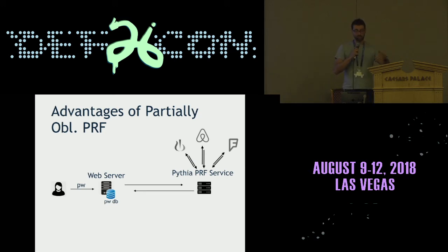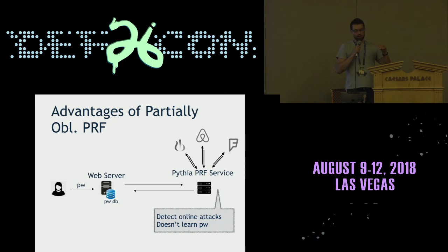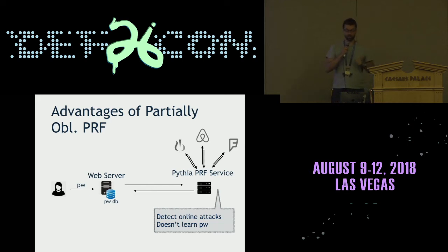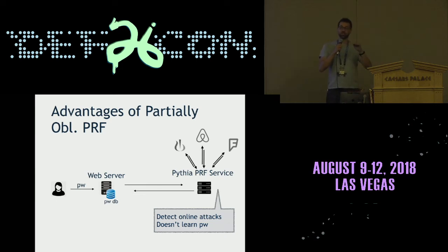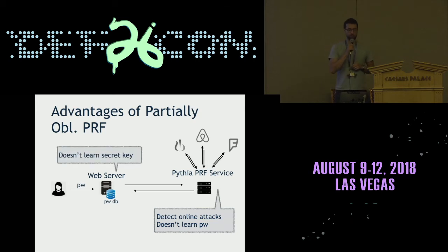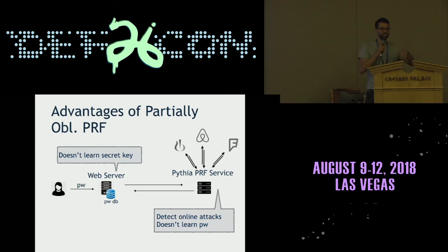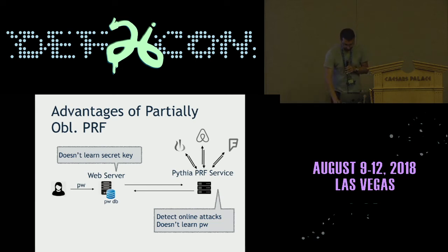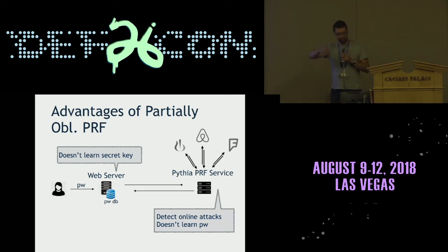Let's pop up to the high level and talk about what this construction gives us. On the Pythia side, using this construction means the service has enough information to detect online attacks — you have to specify the user ID and you have to be right about it, because if you specify the wrong user ID you get the wrong output every time. But importantly, the server can apply the pseudorandom function and never learns anything about the password. On the web server side, he can compute this keyed pseudorandom function through this protocol but never sees the key — this is key because if you break into the web server and scrape memory or steal the disk, if the web server has the key anywhere, the attacker probably has the key too. So our goal is to get this into the world and get people to use it. A company called Virgil Security has built a production-grade version of Pythia that's way better than my research prototype.